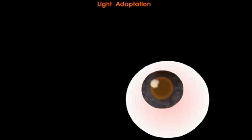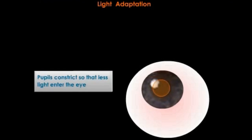During light adaptation, the pupils constrict and the eyelids close partially to allow less light to enter the eye.